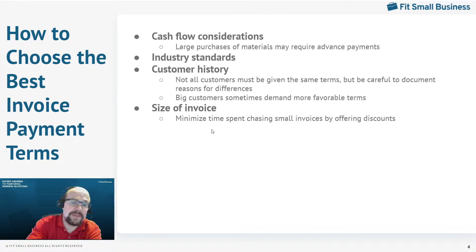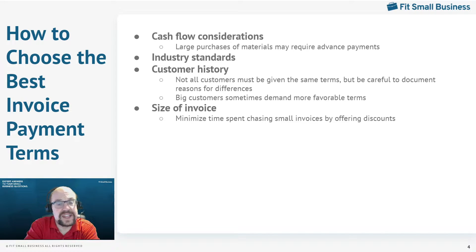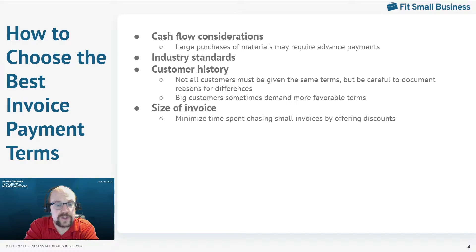How do you choose the best invoice payment terms? The first thing to look at is cash flow. Do you have enough cash flow to provide the service before billing your customer? Construction companies often face this problem — if the service will cost $500,000 in materials, you may need the customer to pay a big chunk upfront. Also consider what payment terms your vendors extend to you. If vendors require net 10, it may be hard to extend net 30 to your customers, as constantly paying bills in 10 days while collecting in 30 days could create cash flow problems.